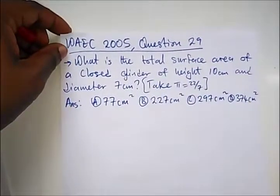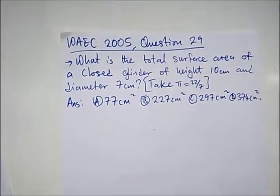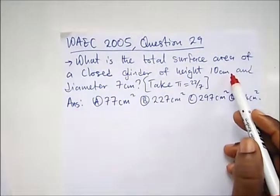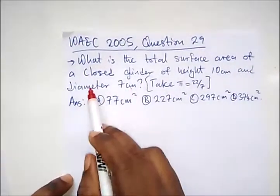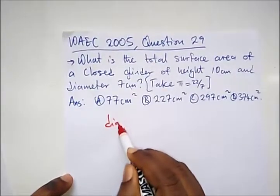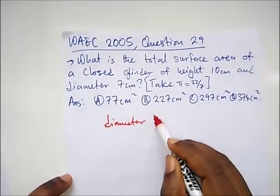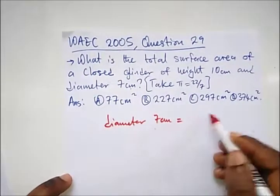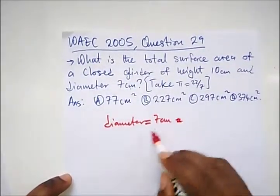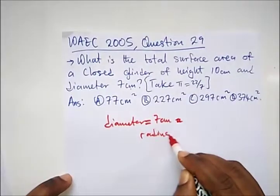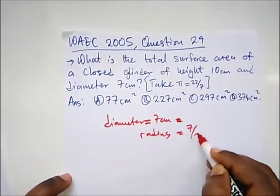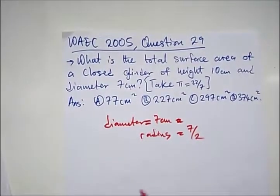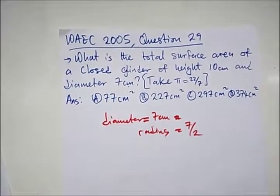And our right option is option D. Our final question says what's the total surface area of a closed cylinder of height 10 centimeters and diameter 7cm? This is diameter, so if our diameter is 7 centimeters, what would be our radius? Our radius will be 7 over 2, that's half of the diameter.